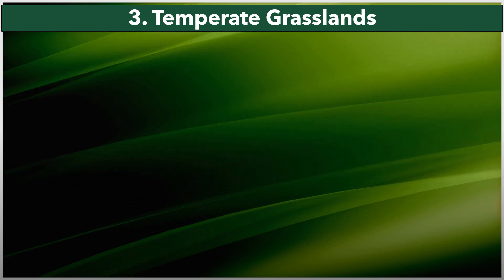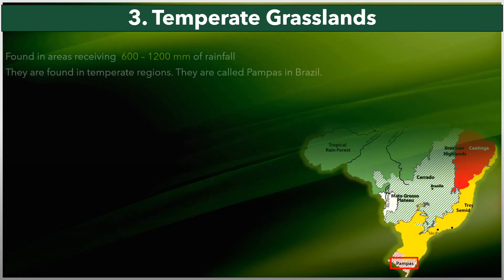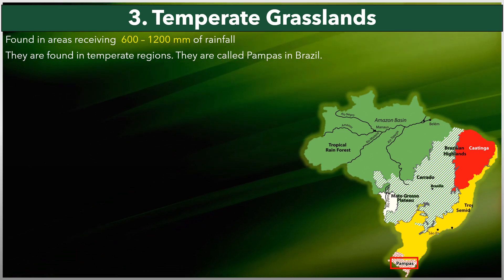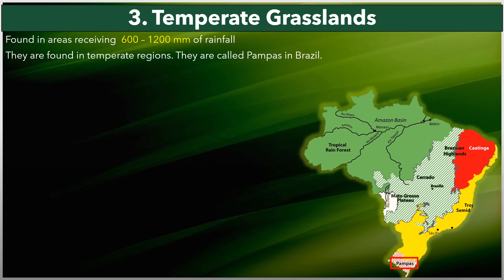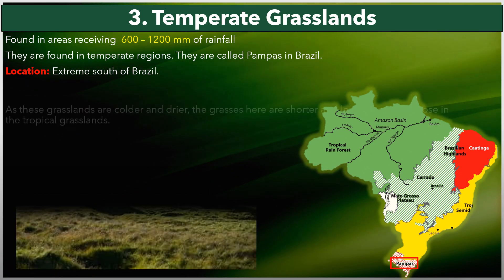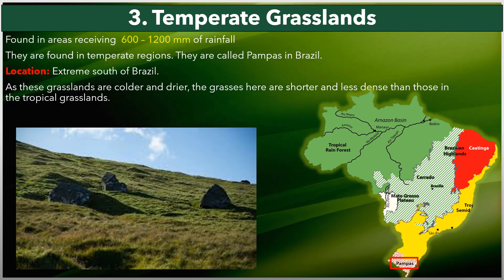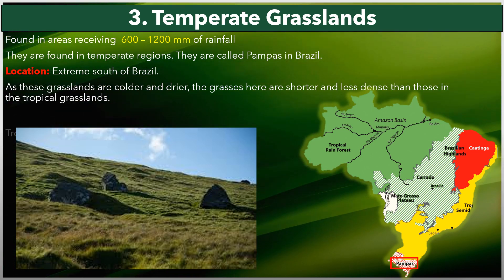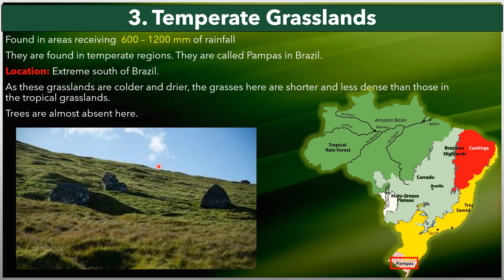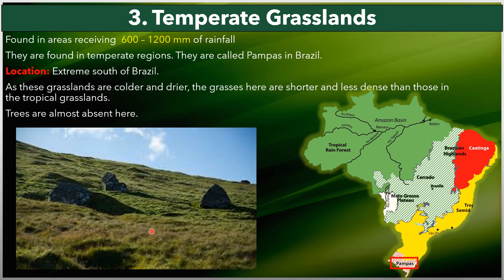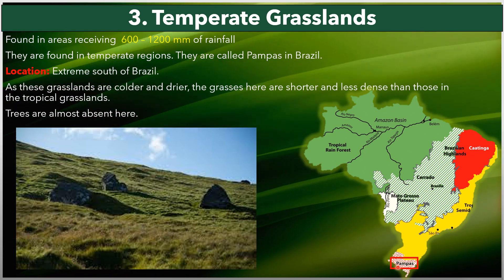The third type is temperate grasslands, found in areas receiving approximately 600 to 1200 millimeters of rainfall. In Brazil they are also known as pampas, located in the extreme south of Brazil. Being colder and drier, the grasses here are shorter and less dense than those in the tropical grasslands. Trees are almost absent, as seen in the adjoining figure.